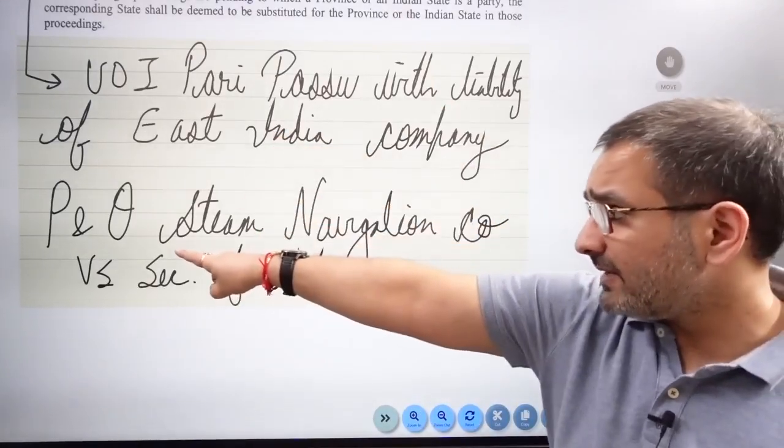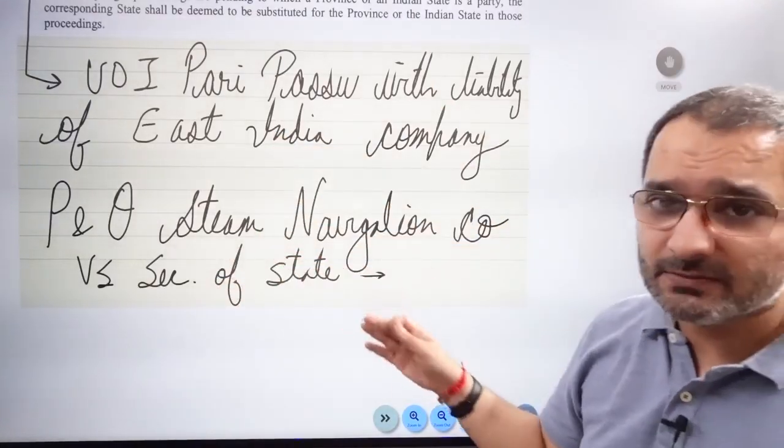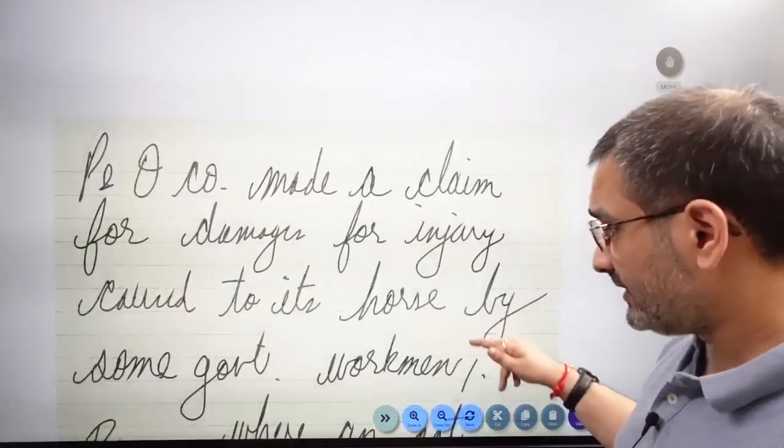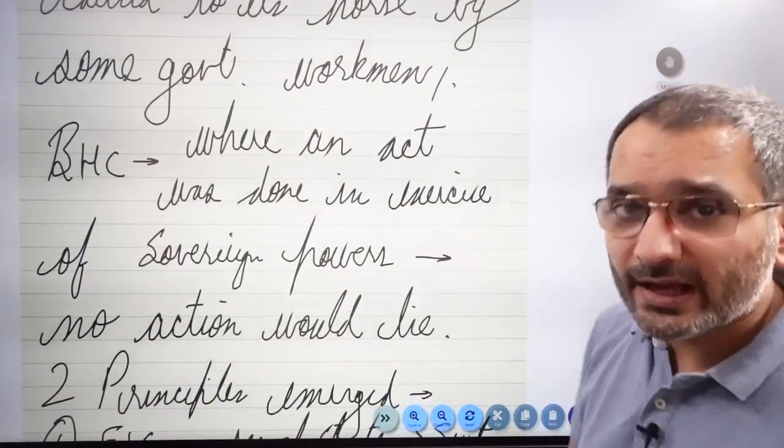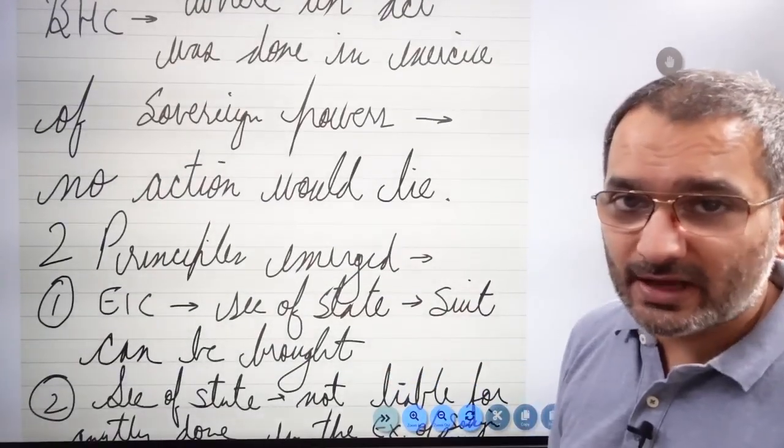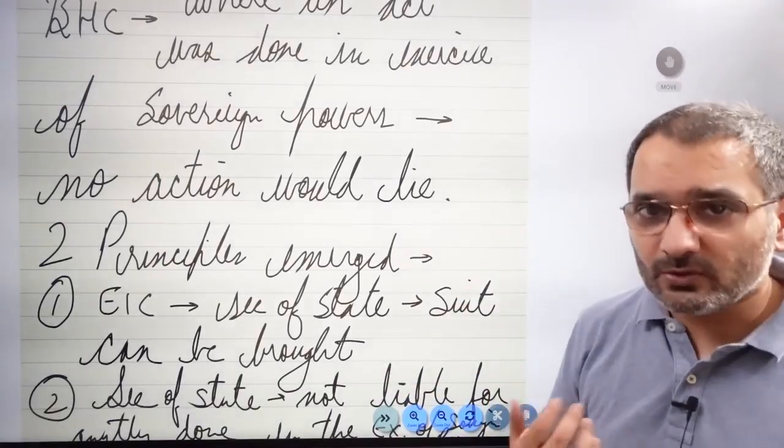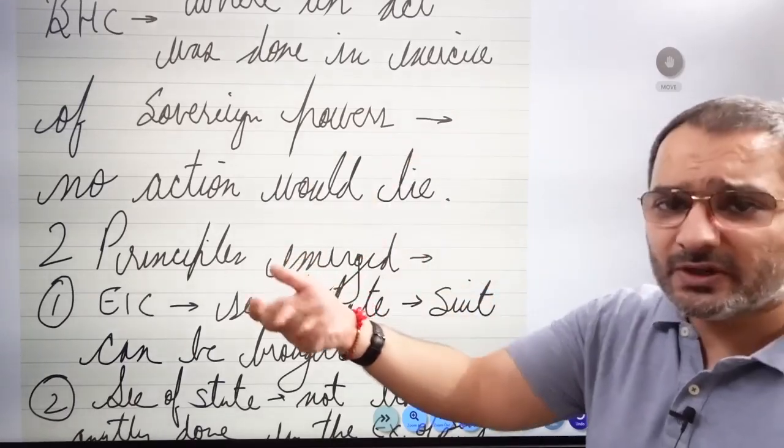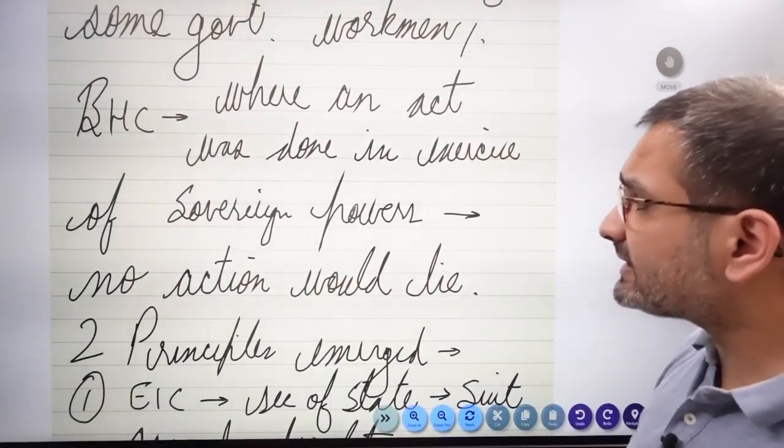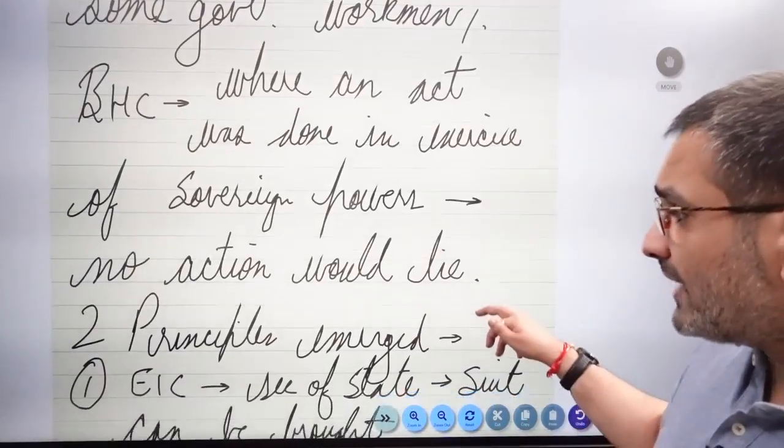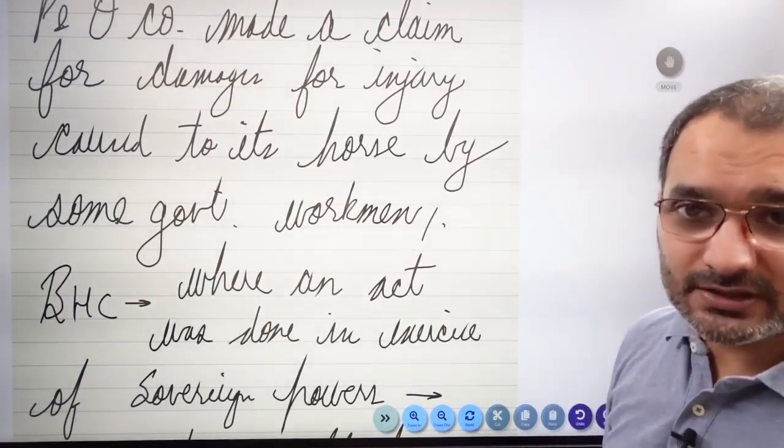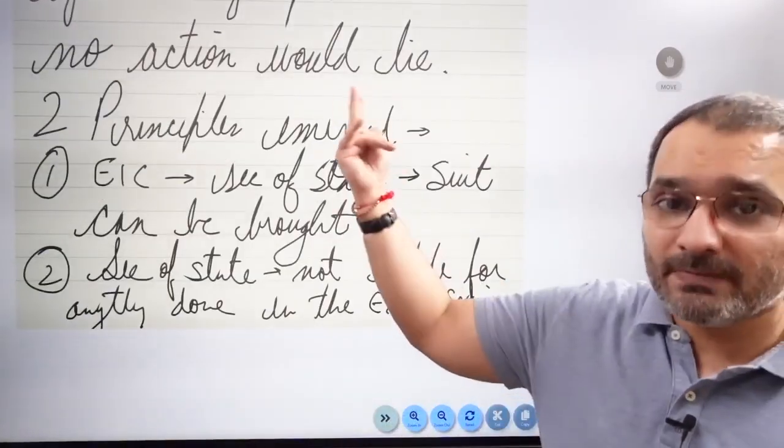As soon as you have written Article 300, mention P&O Steam Navigation Company vs Secretary of State because this is the first cardinal case law associated with this story. The P&O company made a claim for damages for injury caused by some government workmen. The Bombay High Court held that where an act was done in exercise of sovereign powers, no action would lie.